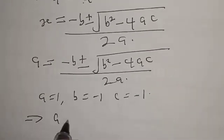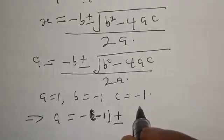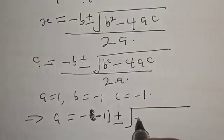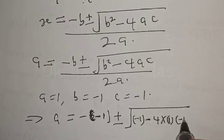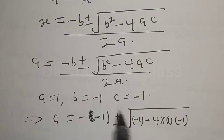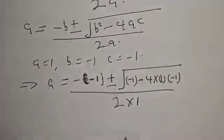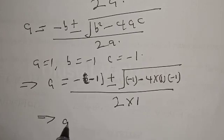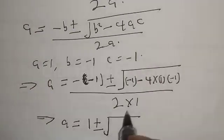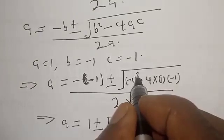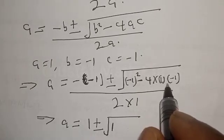This implies that we have a equal to minus b, that is minus of minus 1, plus or minus square root of b squared — that is minus 1 squared — minus 4 times 1 times minus 1, because our c is also minus 1 and our a is 1, then over 2 multiplied by 1. Minus 1 squared is the same as 1, and minus 4 times 1 times minus 1 is plus 4.